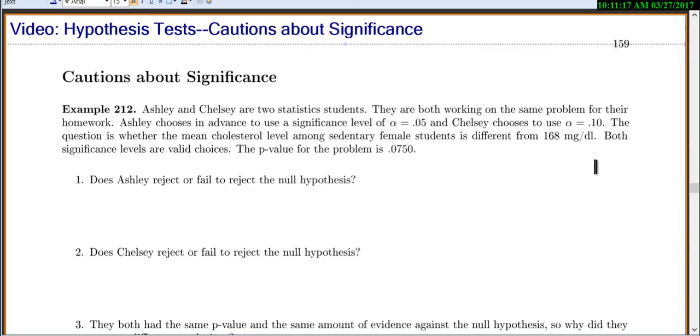Ashley chooses in advance to use a significance level of alpha equals 0.05, and Chelsea chooses to use alpha equals 0.10. Now, this is perfectly okay. There's nothing that sets your significance levels. You are allowed to choose what you want.